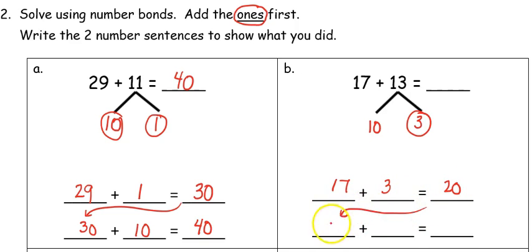I'll take that 20 and to that I'll add my 10. 20 plus 10 equals 30. So 17 plus 13 equals 30.